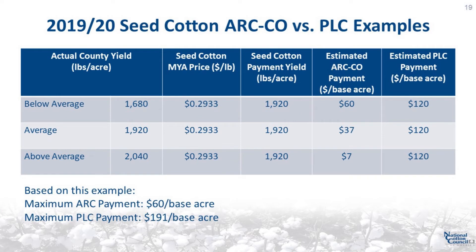This table provides a comparison of the ARC County and PLC examples. With a below-average county yield of 1,680 pounds per acre, the ARC County payment would be $60 per base acre, while the PLC payment based on a payment yield of 1,920 pounds per acre would be $120 per base acre. With an average county yield of 1,920 pounds per acre, the ARC County payment would be $37 per base acre, while the PLC payment would still be $120 per base acre. With an above-average county yield of 2,040 pounds, the ARC County payment would be $7 per base acre, while the PLC payment would again be $120 per base acre. If the seed cotton marketing year average price is lower than 29.33 cents per pound, both payments could be higher, but ARC County would max out at $60 per base acre while PLC would max out at $191 per base acre.